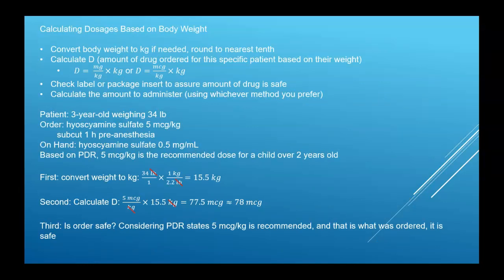Your basic steps are: convert your body weight if needed — be careful because sometimes it will be given to you in kilograms. Body weight, if there's no facility policy, we usually round to the tenth. Then calculate D based on body weight by taking the weight-based order — whether grams per kilogram, milligrams per kilogram, or micrograms per kilogram — and multiply by the kilograms. Then check your label to make sure it's safe, and calculate the amount to administer based on what you have on hand.